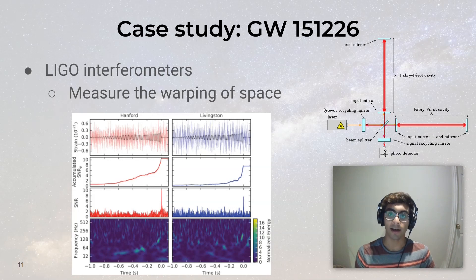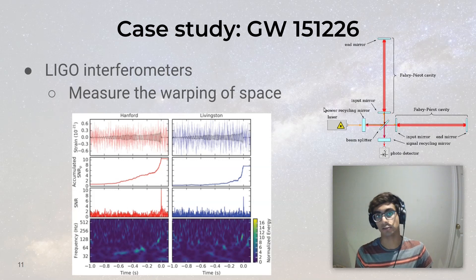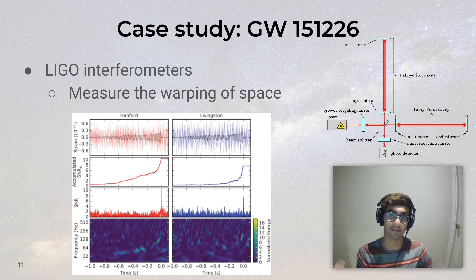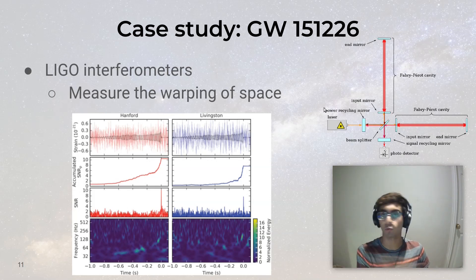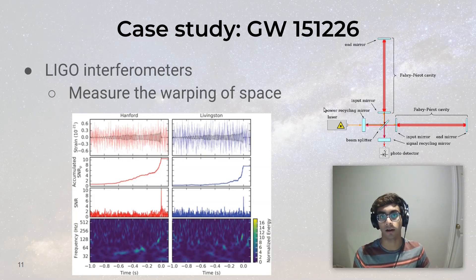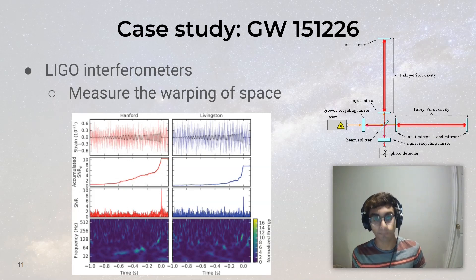So accretion, lensing, and gravitational waves are three of the most common ways to observe and learn about these compact, dense objects — black holes and neutron stars. And black holes and neutron stars play a pretty crucial role all throughout astrophysics, helping us learn about all sorts of things from the early universe to galaxies.